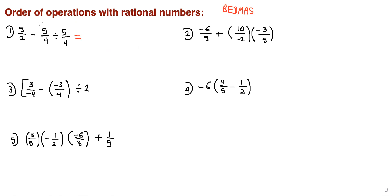So here we have to do this first. Now when it's division, you change it to multiplication and flip the 5 over 4 to 4 over 5 — you flip the divisor. But hold on: we have 5 over 4 divided by 5 over 4. When you divide anything by itself, it gives you 1, so you could save yourself the hassle and just go 5 over 2 minus 1.